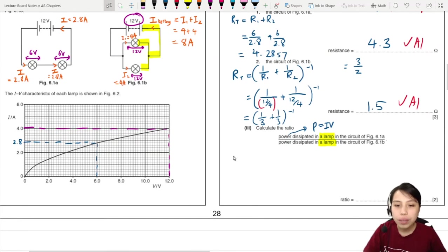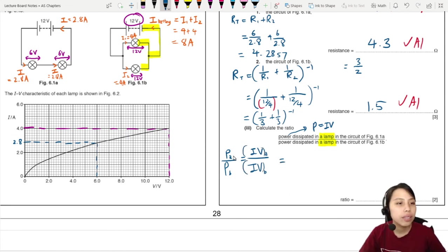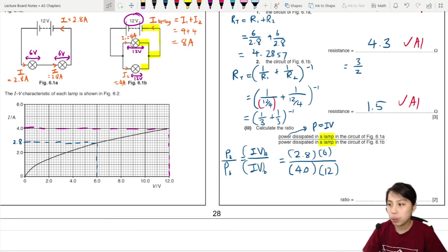So you need to find the power of a lamp in A over a power lamp in B. So take IV in A, IV in B. So the current is just going to be 2.8 times 6 divided by the ones in parallel. So this will be 4.0 times 12. What is this value? 4 times 12, that should give us 0.35. And this is a ratio. So don't give in fractions, give it in the decimal place.